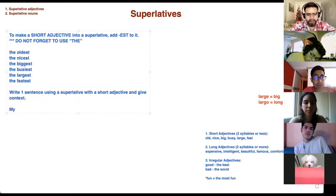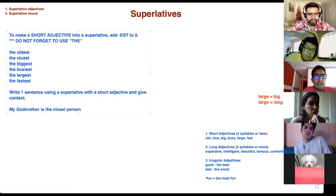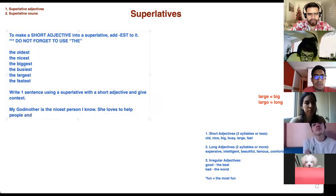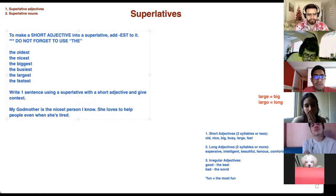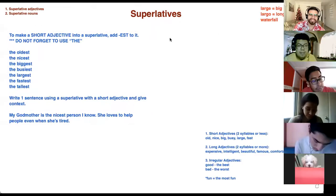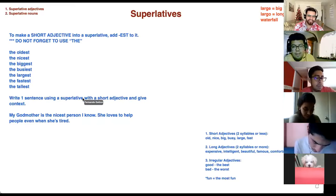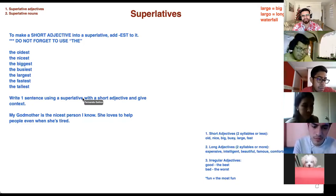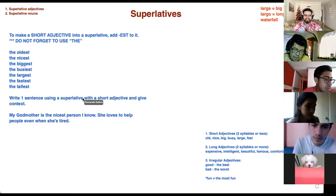For example, I can say my godmother is the nicest person I know. She loves to help people, and even when she's tired. Share your sentence. My grandmother is the oldest person in my family. She's 86 years old. Read everything again please. My grandmother is the oldest person in my family. She's 86 years old. Wow, that's cool. 86 is a good age.